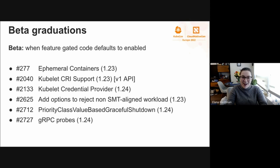We also graduated kubelet CRI support — we now support a v1 API, which is very exciting. We've graduated kubelet credential provider to beta, and added support for and graduated gRPC probes to beta. If you want to look up any of these particular features, you can do so by enhancement number, which is included on the slide. In the copy of the slides we're sharing, we'll also include some links.